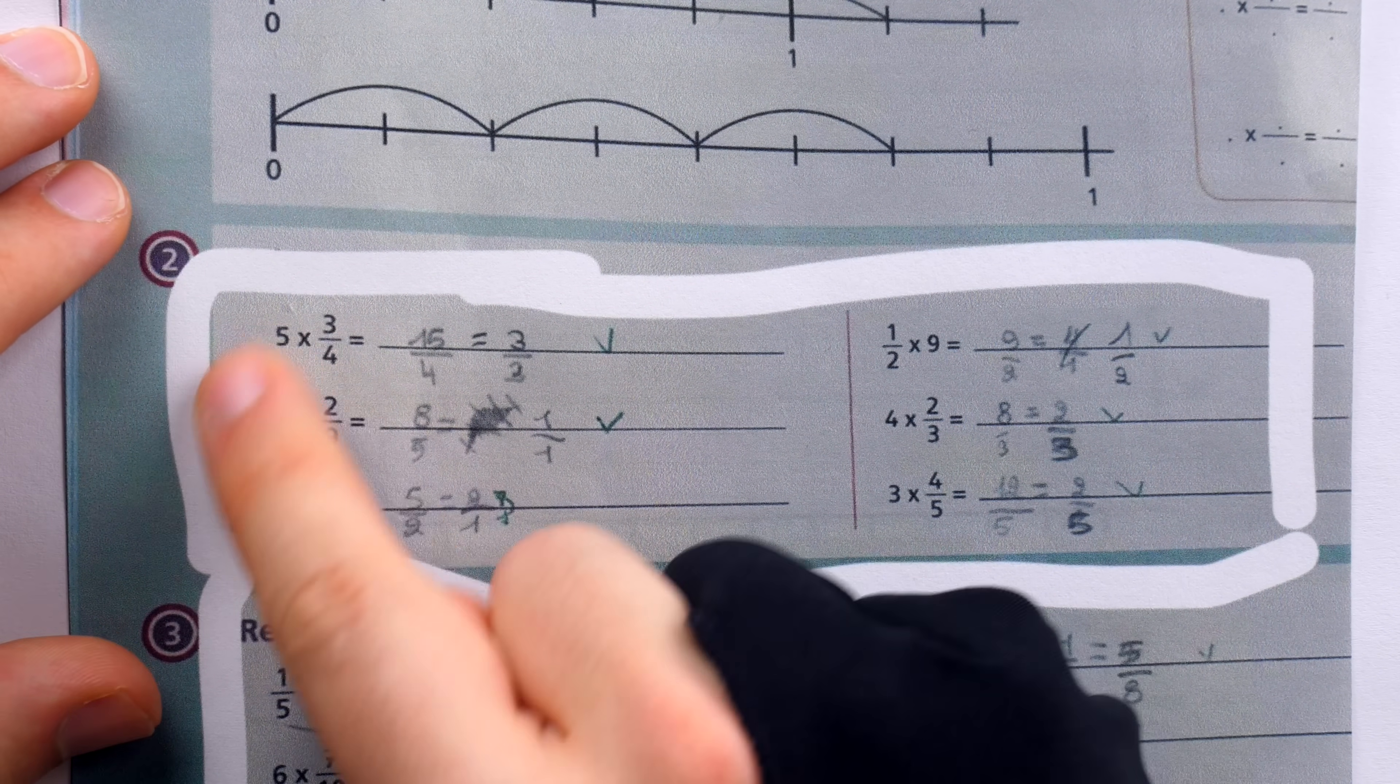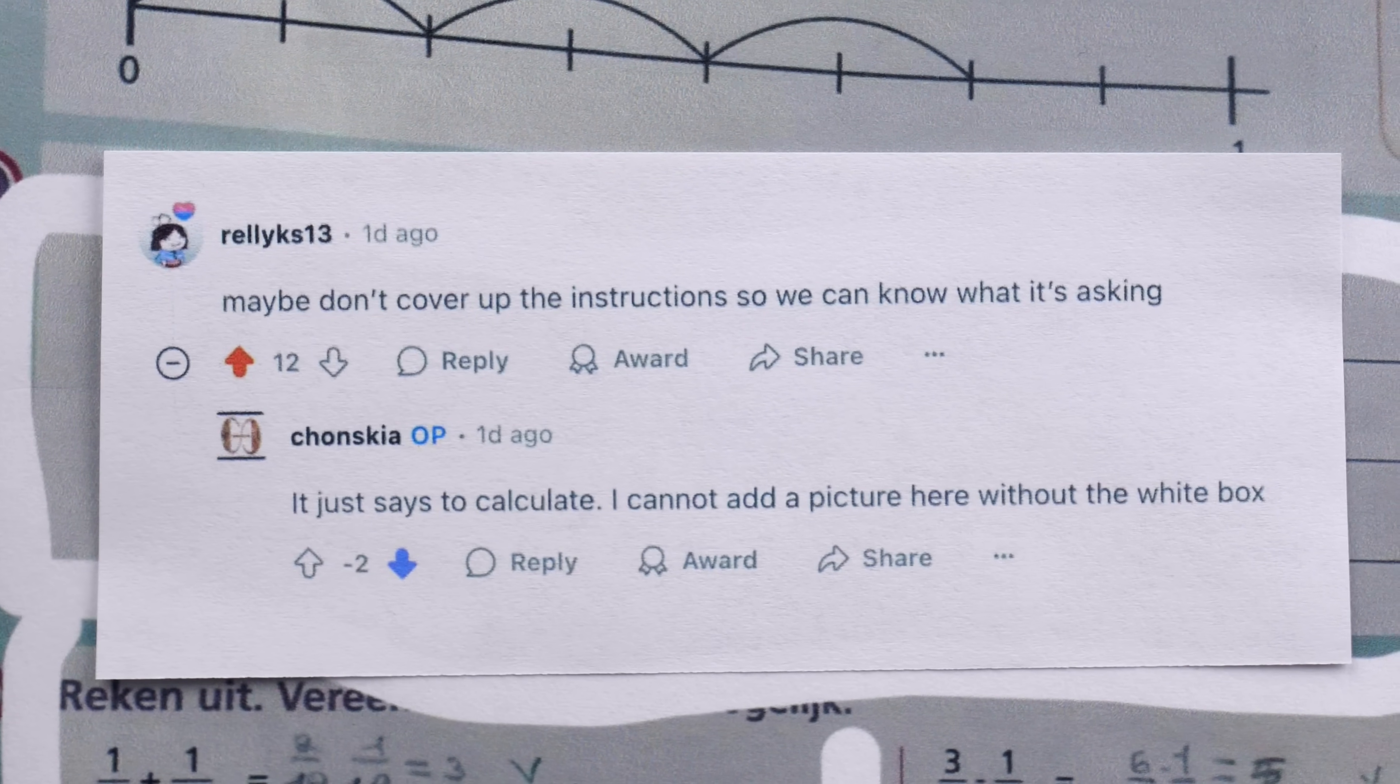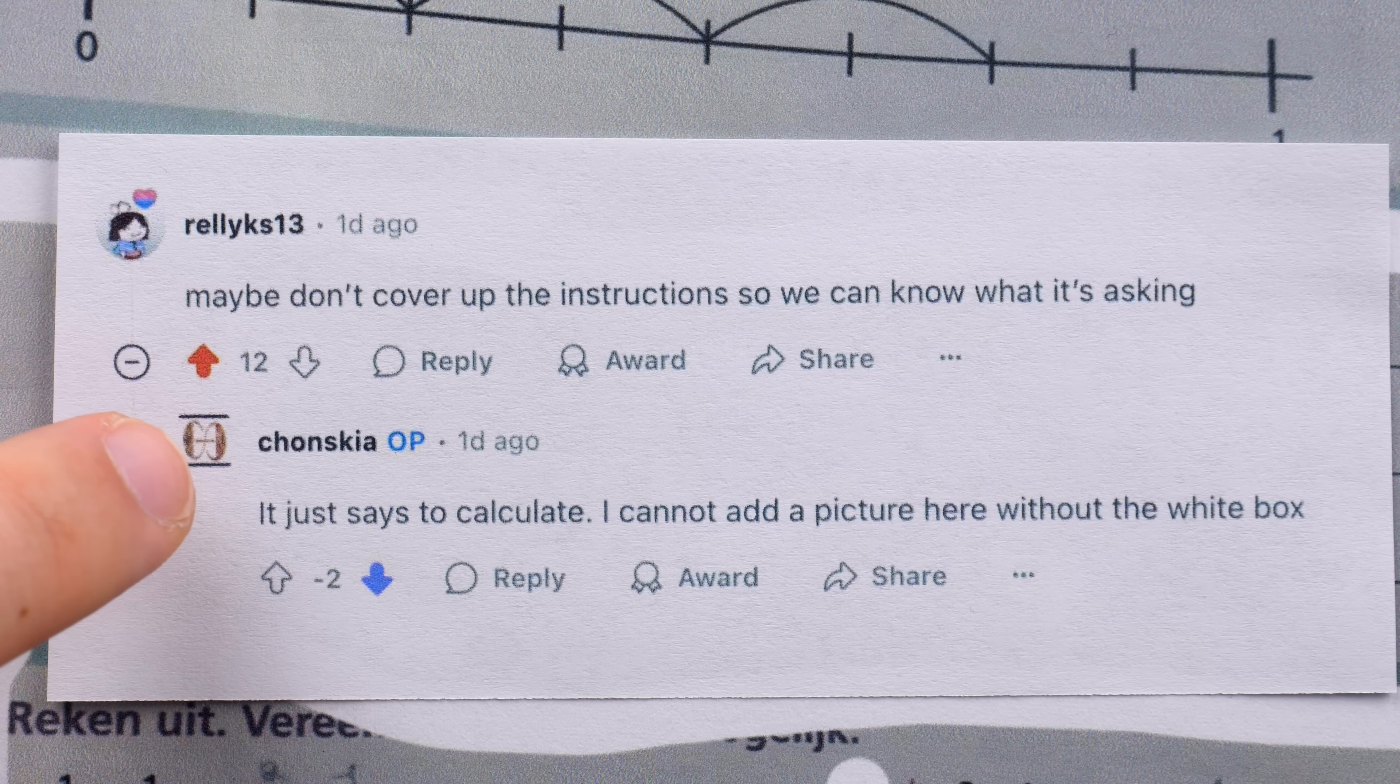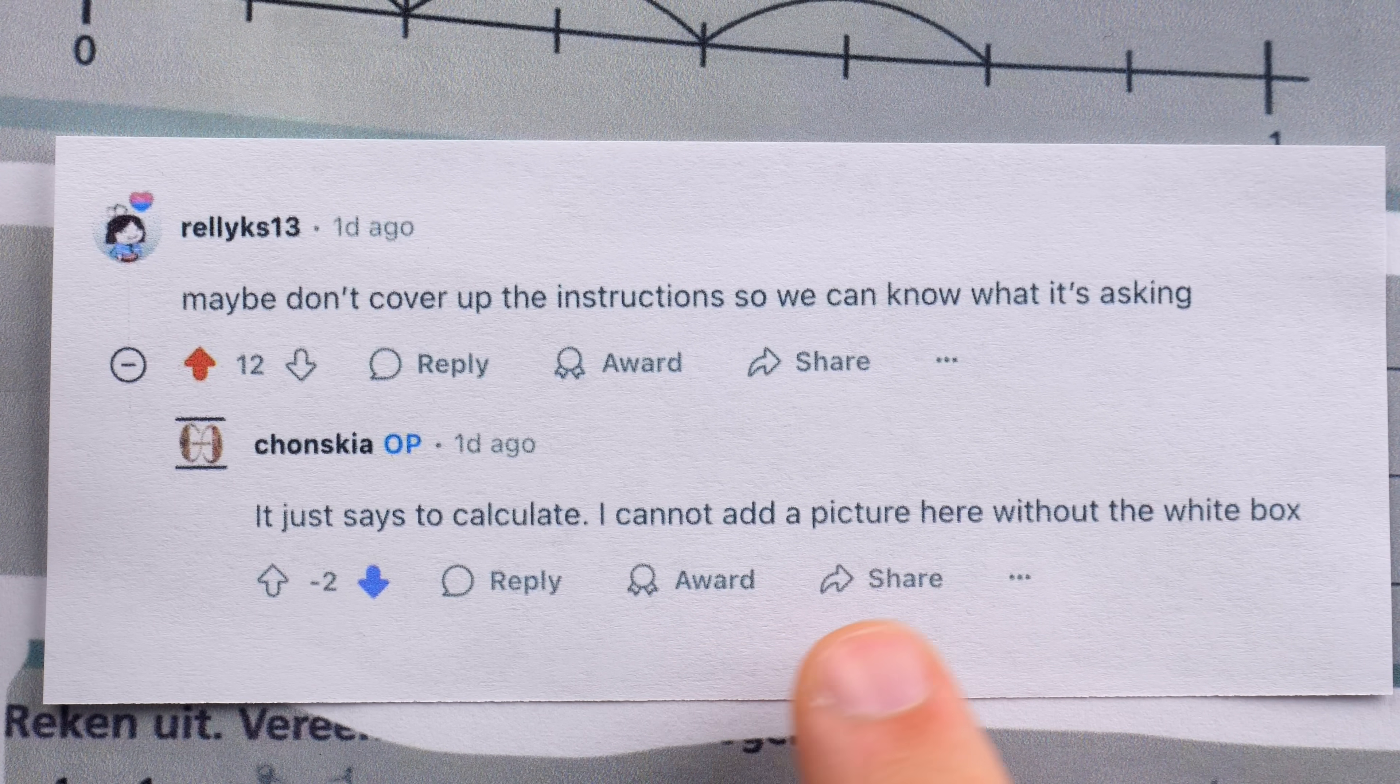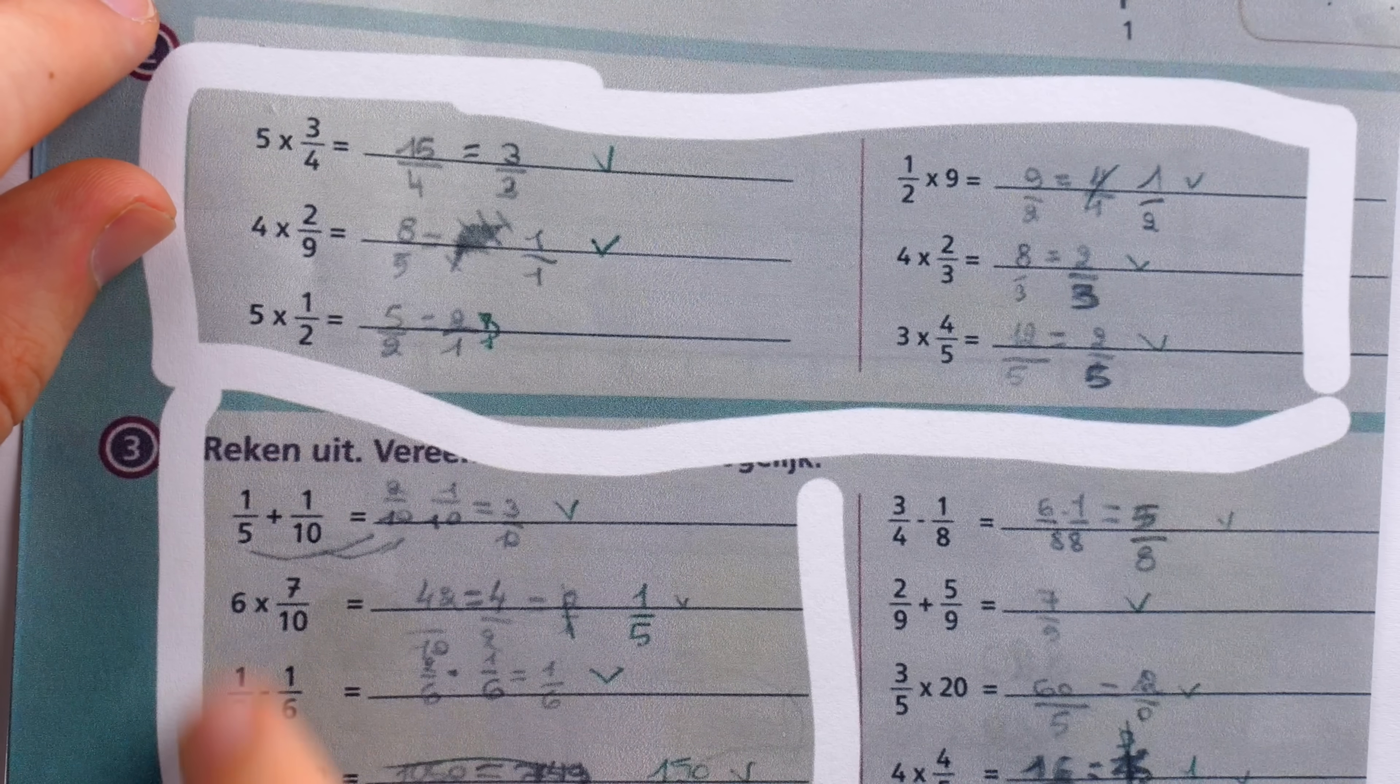They ostensibly want us to crack the case, but they've deliberately withheld critical information. What does it say? Does it say to calculate the product, or does it say to just write whatever number you feel like? Of course, our fellow detectives were quick to sniff him out on this. Maybe don't cover up the instructions so we can know what it's asking. And the OP is bizarrely secretive. It just says to calculate, and then he claims that he cannot add a picture here without the white box.